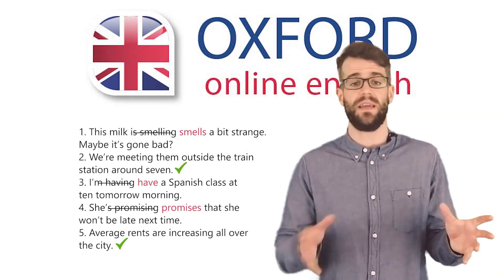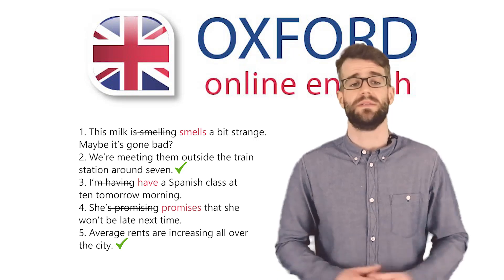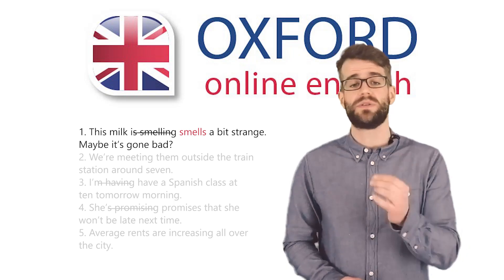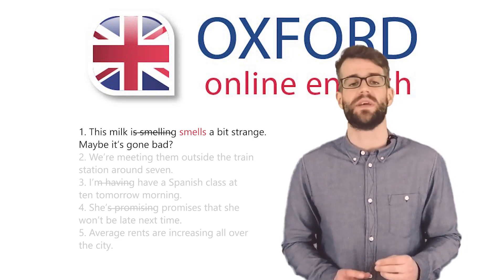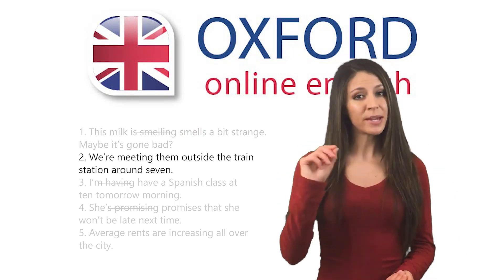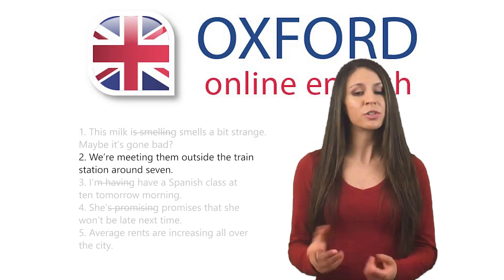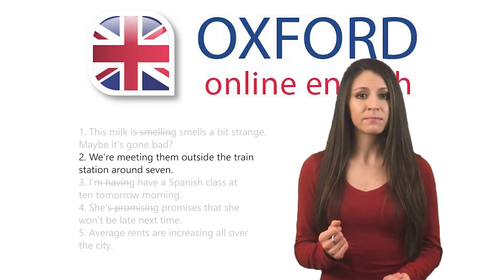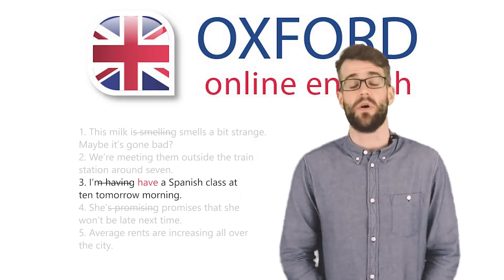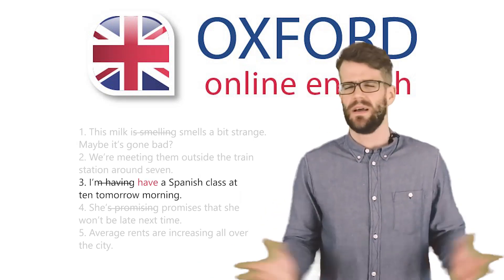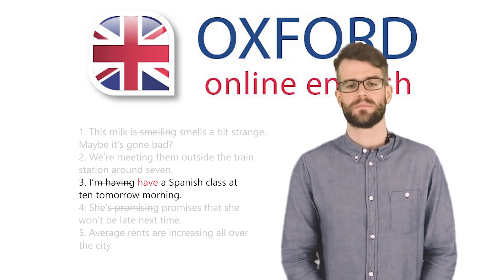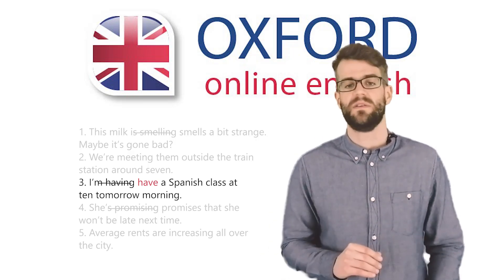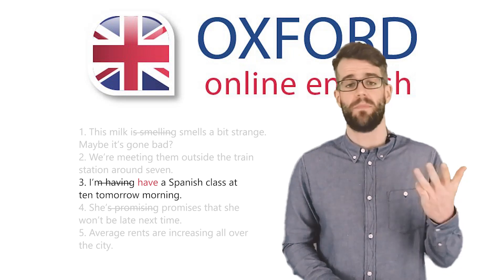Verbs of sensing, like smell, see, or hear, are not generally used in the present continuous. In sentence one, even though you're talking about something which is just true now, you use the present simple because you're using a verb of sensing — smell. Use the present continuous to talk about arrangements in the future. This is common for talking about social plans. You can also use the present simple to talk about the future, like in sentence three. Use the present simple to talk about future events which follow a timetable — this includes things like trains, planes, meetings, appointments, and lessons.